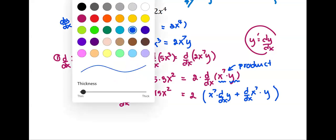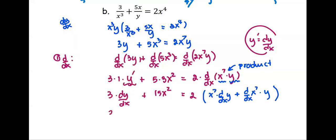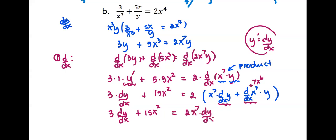We simplify a little bit more. On the right-hand side, we multiply 2 to all the terms. The term dy by dx stays, and d by dx of x to the seventh becomes 7 times x to the sixth. So we get 2x to the seventh times dy by dx, plus 7 times 2, which is 14, times x to the sixth times y.